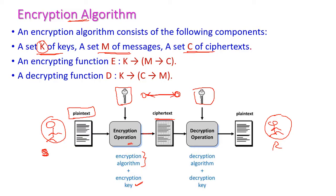At the receiver's end, the receiver receives the ciphertext and uses the decryption algorithm with the help of the decryption key. The key is shared between sender and receiver. After the decryption operation, the receiver gets the plain text, which is the original secret message. This is how the encryption algorithm works.